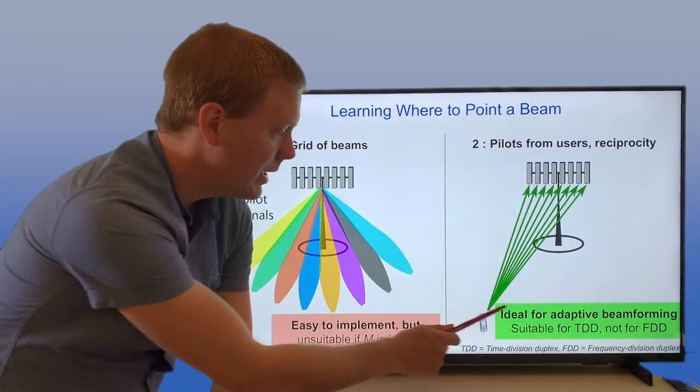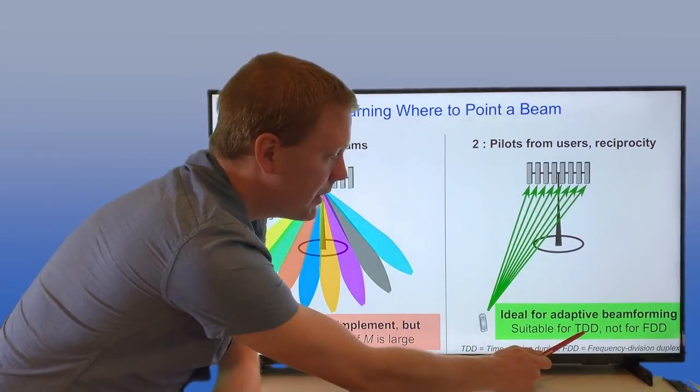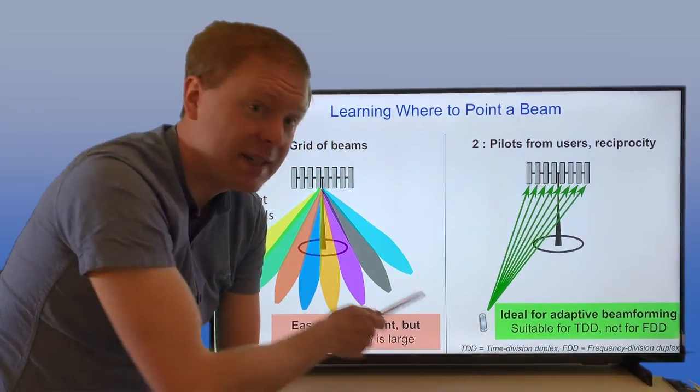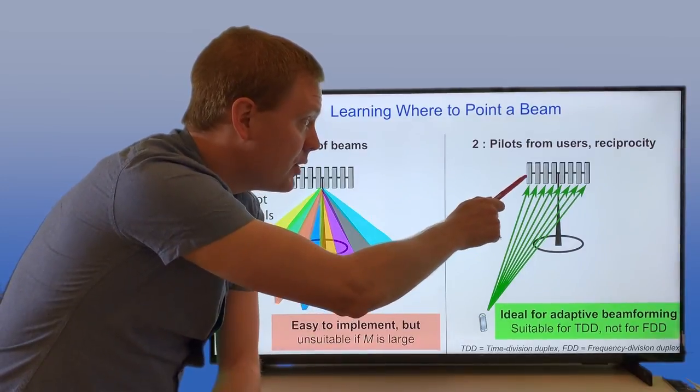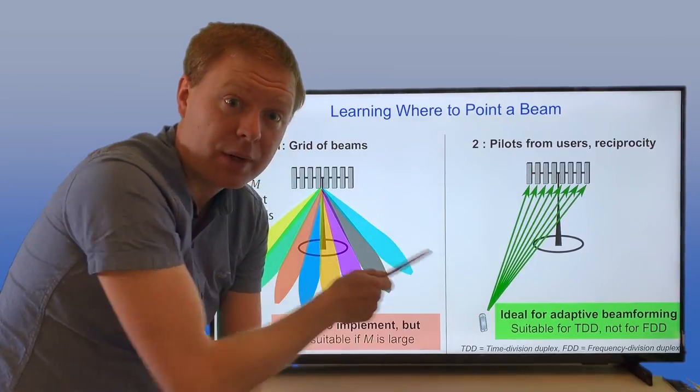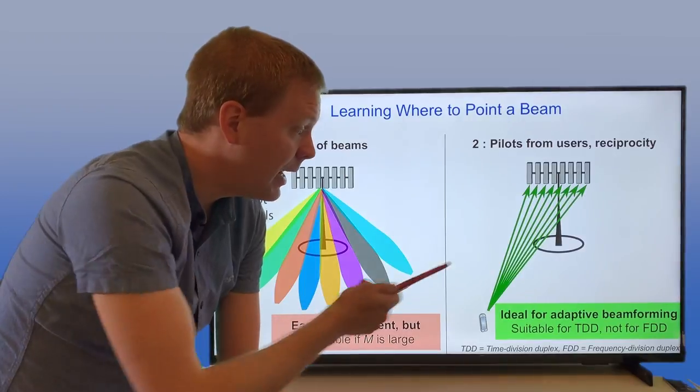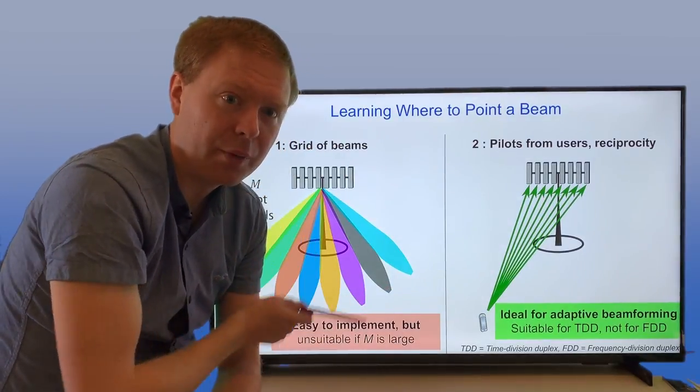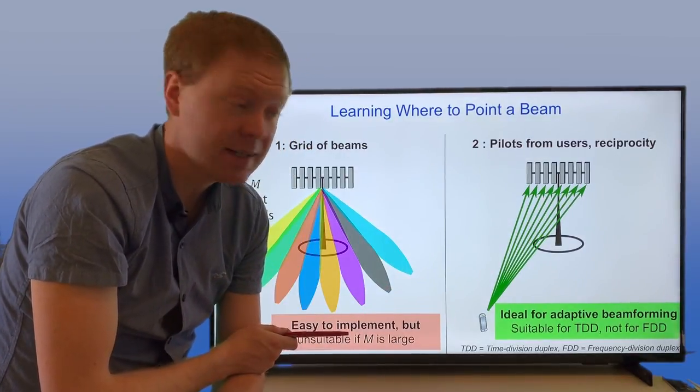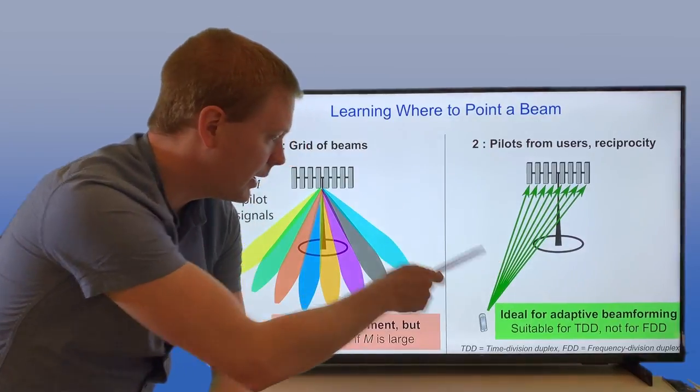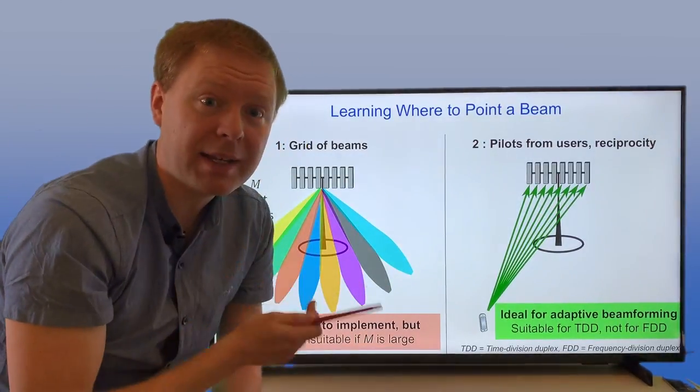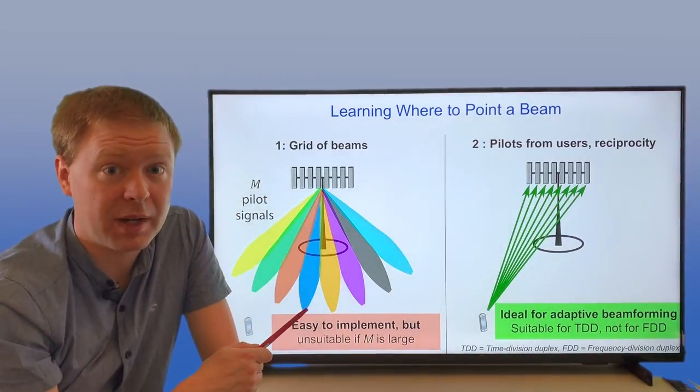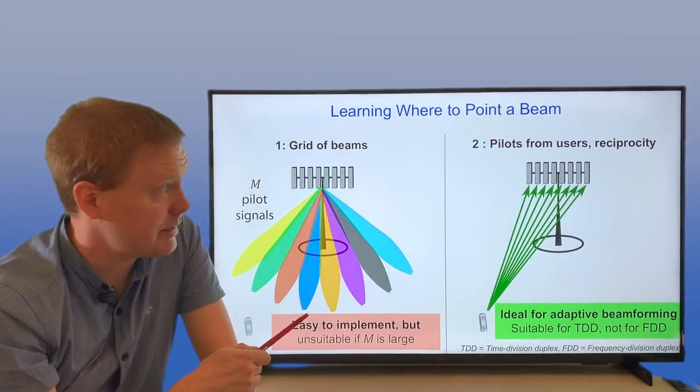The only problem is that this is only suitable for time division duplex, or TDD, where you're first sending data in the uplink, and then you switch to sending data in the downlink on the same frequency. In FDD, where you have the uplink and the downlink on different frequencies, you can do this in the uplink but you need to do this in the downlink. For that reason, people are mainly considering TDD bands in the future if you'd like to have a large number of antennas.